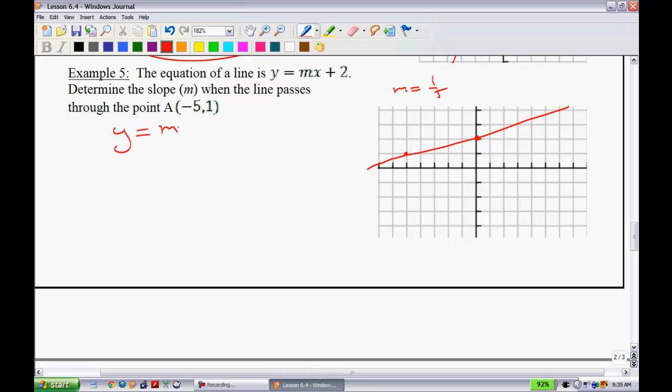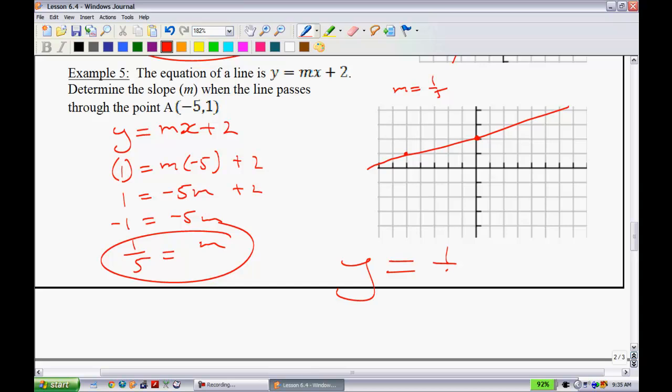So doing this algebraically, we have y is equal to mx plus 2. I'm missing my m, my slope. So I'm going to substitute in this negative 5, 1. 1 goes in for my y. Negative 5 goes in for my x. So simplifying this, I have 1 is equal to negative 5m plus 2. Subtracting 2 from both sides, I have negative 1 is equal to negative 5m. Dividing by negative 5, I get 1 fifth, once the two negatives cancel out. So the equation of this line is y is equal to 1 fifth x plus 2.